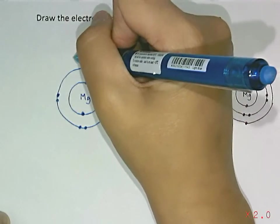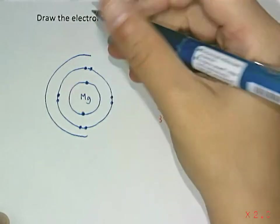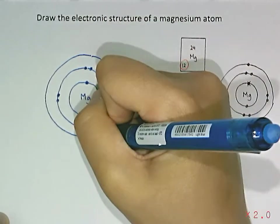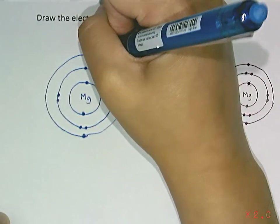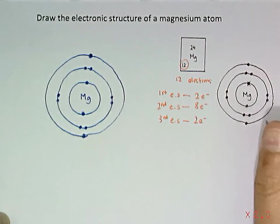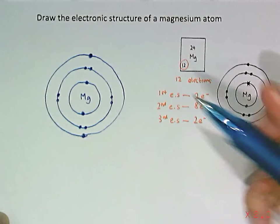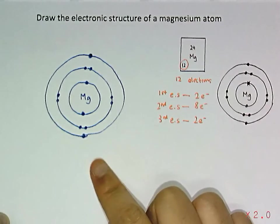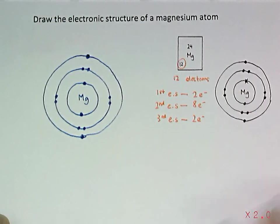So, the last two, we'll put in the third electron shell. So, that, all together, is 12. So, this is the electronic structure of a magnesium atom. Thank you so much.